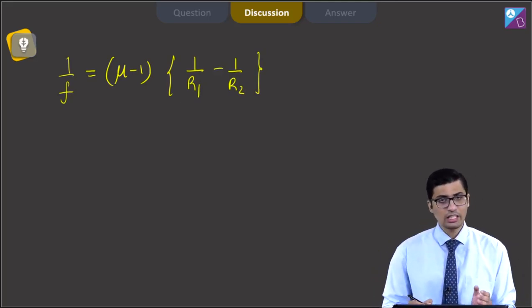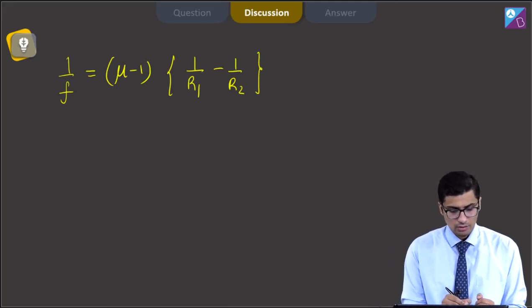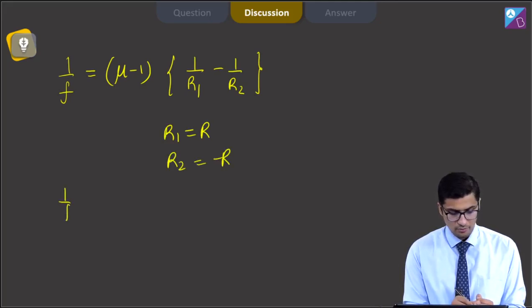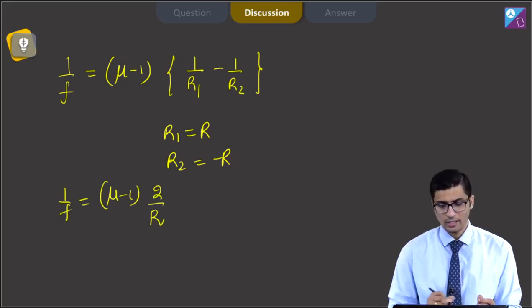Now since this is an equi-convex lens, we can write down that R1 is equal to R and R2 is equal to minus R. Thus, 1 by F will be equal to mu minus 1, 2 by R.